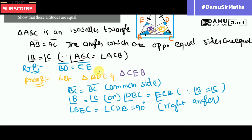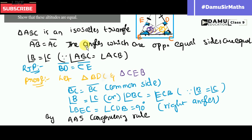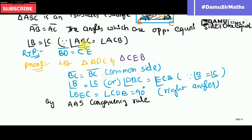By using the AAS congruency rule — we have one angle, another angle, and a common side — the two triangles are congruent to each other. That means triangle BDC is congruent to triangle CEB by AAS.